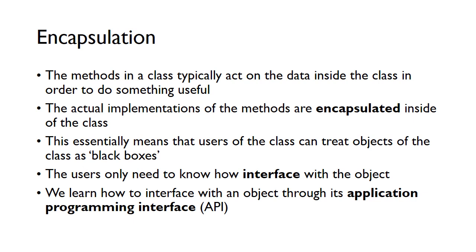The reason we do this is the idea of encapsulation. The methods in the class typically act on the data inside that class to do something useful, so everything to do with that class is encapsulated inside of it. Once you've written and developed a class — or somebody else has — when you're using it you just treat it like a black box. We don't really care about the code inside; we just need to know how to interface with the class. When we create an instance of the class we've got an object, and we interface with it using the API — Application Program Interface.